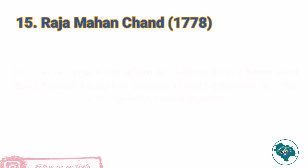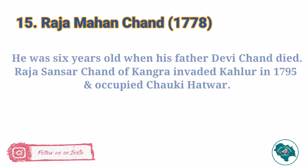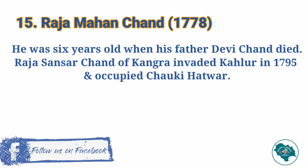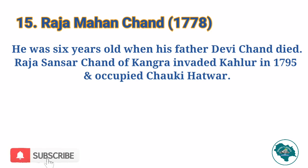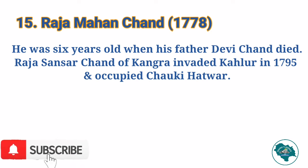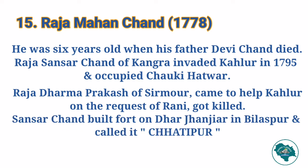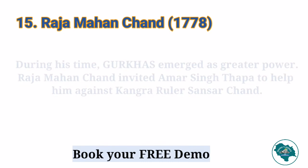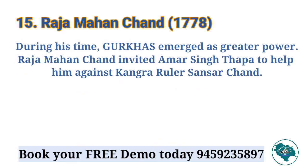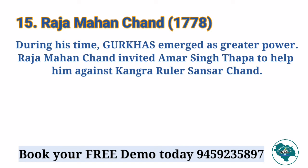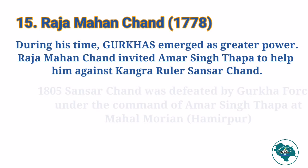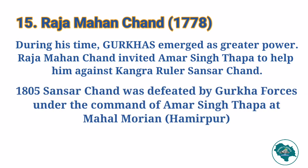After him came Mahanchand. He was six years old when his father Devichand died. Administration remained under Ramu Vazir, who died in 1785. After him, Raja Sansar Chand of Kangra invaded Kehlur in 1795 and occupied Chauki Hatwar. Raja Dharamprakash of Sirmaur, who came to help Kehlur on the request of the Rani, got killed. Sansar Chand built a fort on Dhar Janjayar in Bilaspur called Chhatipur. During his reign, the Gurkhas emerged as a great power with their headquarters at Garhwal. Raja Mahanchand invited Amar Singh Thapa to help against Sansar Chand, and in 1805, Sansar Chand was defeated by the Gurkha force under Amar Singh Thapa at Mahal Moria, i.e., Hamirpur.